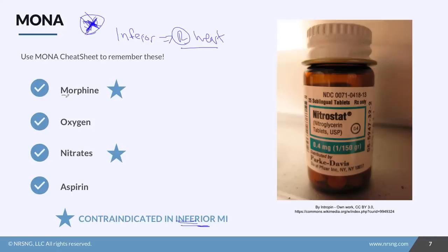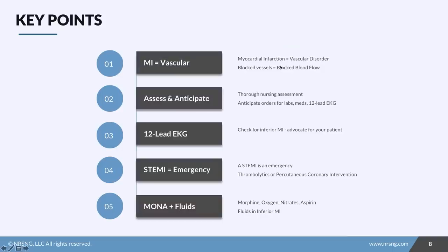We'll use morphine, oxygen, nitrates, and aspirin for angina and for other types of MI. But for inferior MI, because they need this preload so much, we don't want to dilate these patients. We want to make sure they maintain their preload, so morphine and nitrates are contraindicated.